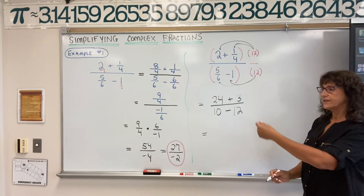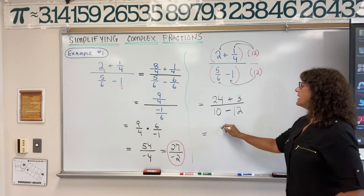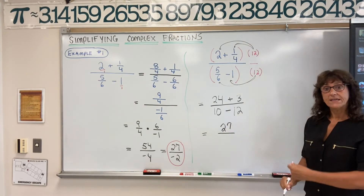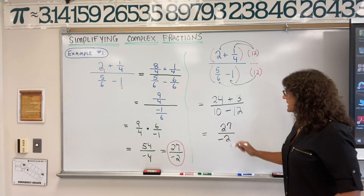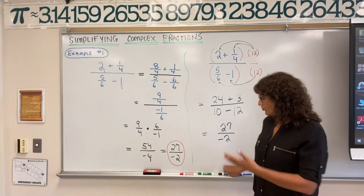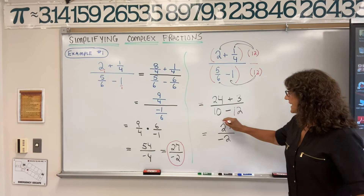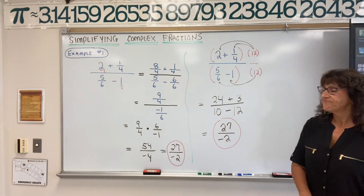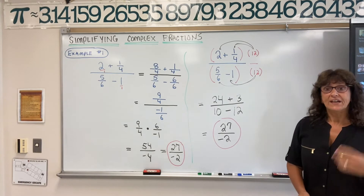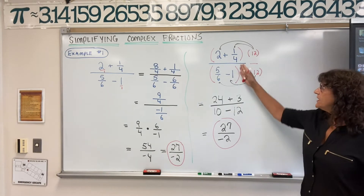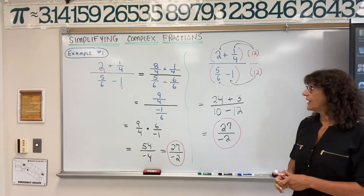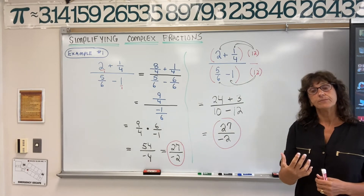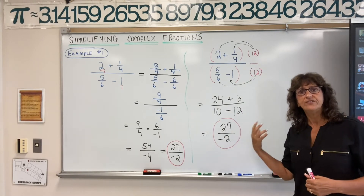Compute the numerator: twenty-four plus three is twenty-seven. Compute the denominator: ten minus twelve is negative two. So we get negative twenty-seven halves — the same answer as method one. This method is a way to clean up your complex fraction quickly, and this is the way we're going to approach the algebraic problems, because it's quicker, easier, and shorter.